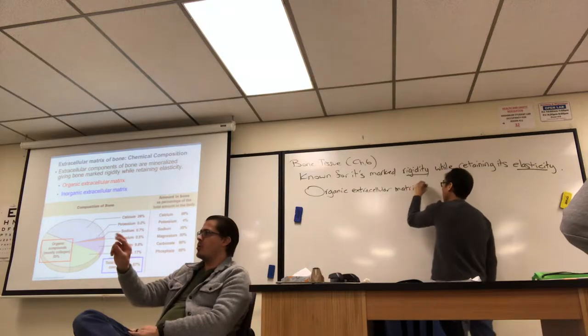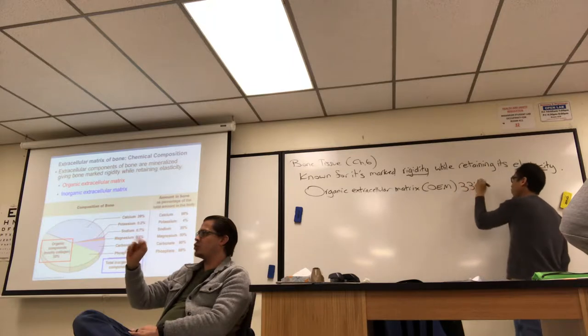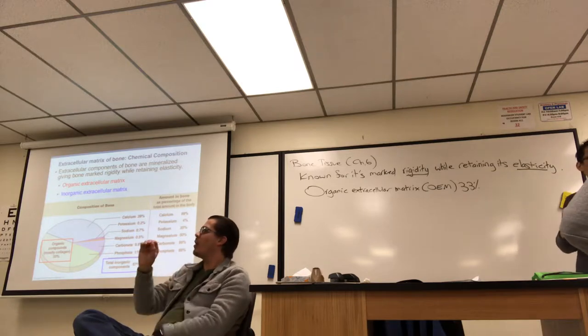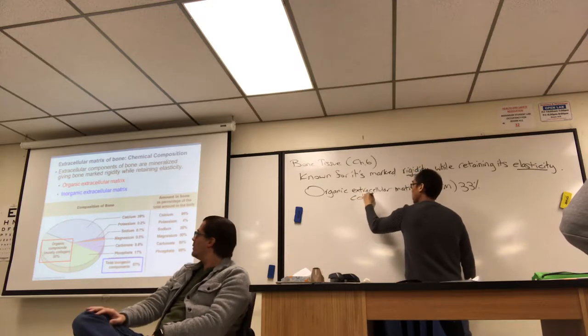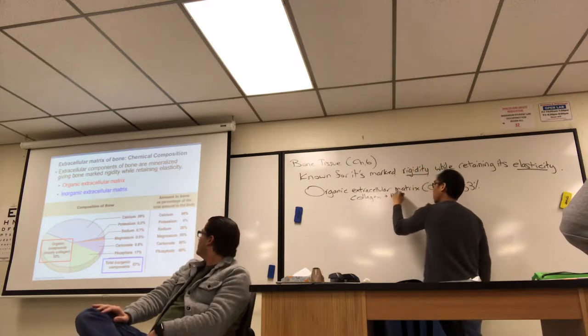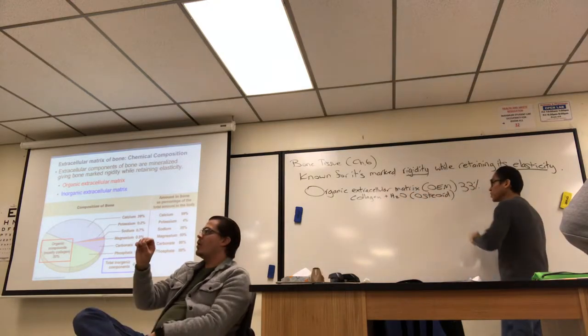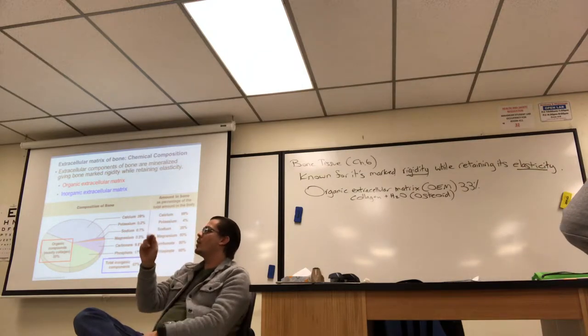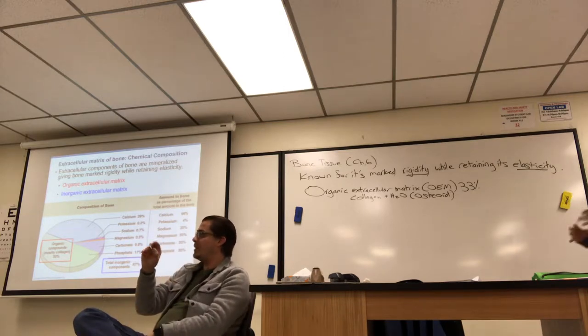The organic extracellular matrix, or OEM for short, is about roughly a third of bone, and it's mostly collagen and some water. They call it osteoid, so collagen plus water, it's called osteoid. Collagen is something that cells can make, this is the organic part. When the organic matrix, the osteoid becomes calcified, that's what we think of as bone. That would be the inorganic extracellular matrix.